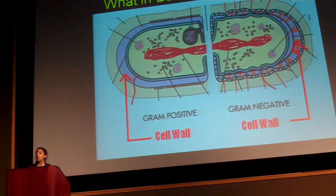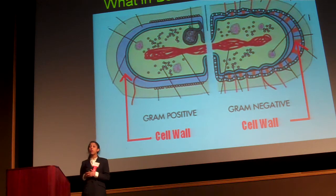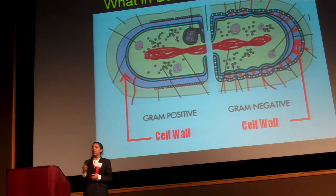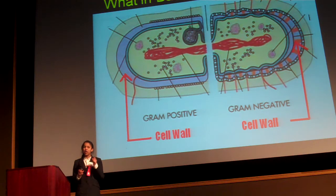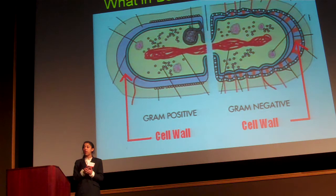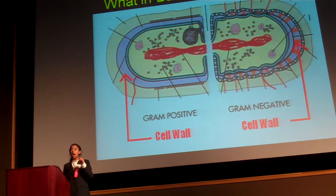E. coli and salmonella were the main players in this contamination. Both are examples of gram-negative bacteria. The main difference between gram-negative and gram-positive bacteria is that gram-negative bacteria has a toxin within its cell walls. When this bacteria breaks down, this toxin remains — this is what we know as endotoxin. When we eat the food, this toxin is what makes us sick. So in my case, I would be trying to detect this endotoxin.